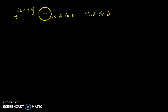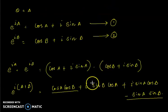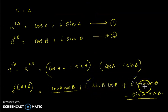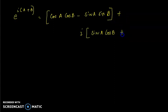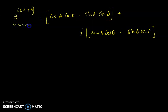The real terms give cos a cos b − sin a sin b. The imaginary terms are cos a sin b and sin a cos b, so taking i common, the imaginary part is i(sin a cos b + sin b cos a).